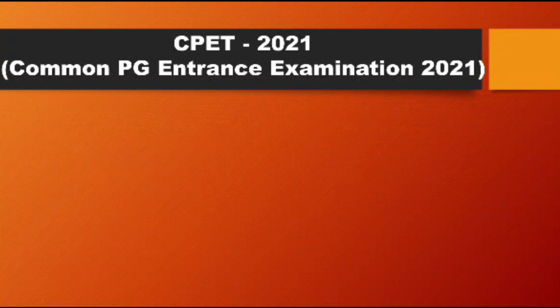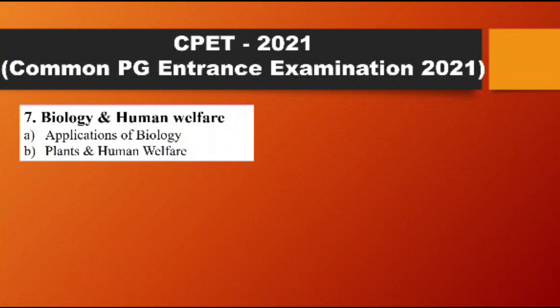The seventh point is Biology and Human Welfare. First, applications of biology: pesticides and bio-fertilizers. Point B is Plants and Human Welfare, where you will learn about wood, cork, fiber, tannin, and starch. This section also briefly covers medicinal plants and paper production.